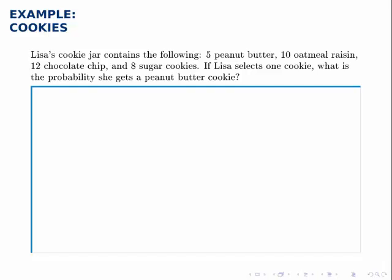Lisa's cookie jar contains the following: five peanut butter cookies, ten oatmeal raisin, twelve chocolate chip, and eight sugar cookies. If Lisa randomly selects one cookie from this jar, what is the probability she gets a peanut butter cookie?